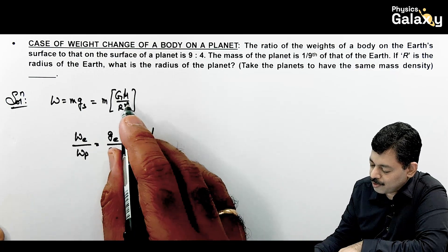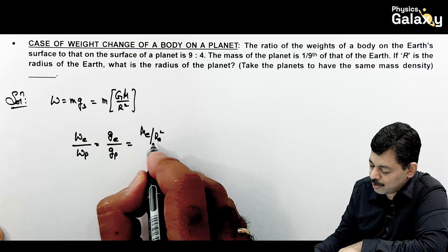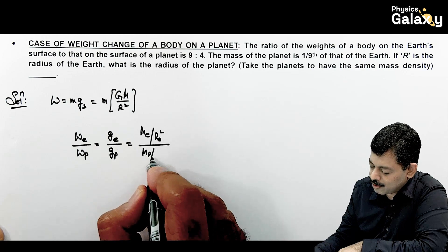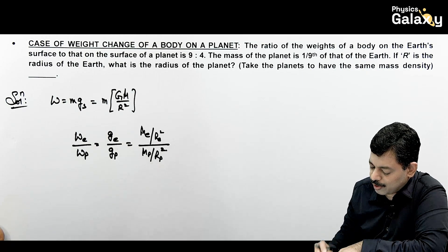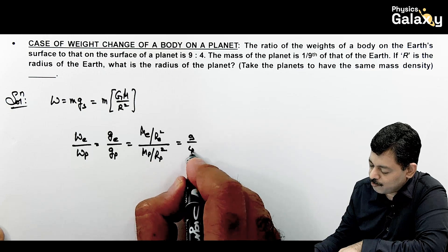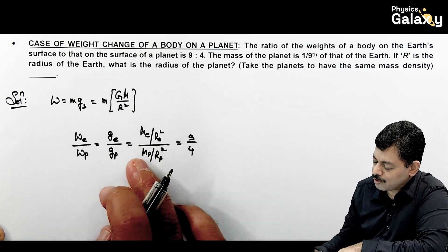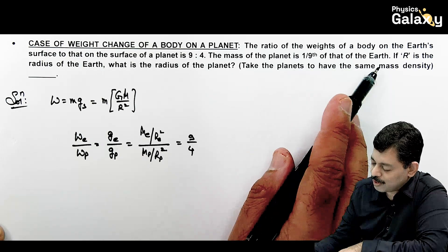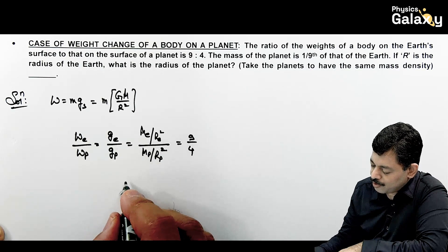This becomes mass of Earth upon radius of Earth squared, divided by mass of planet upon radius of planet squared. This value is given to us as 9/4. The mass of the planet is 1/9 times that of Earth.